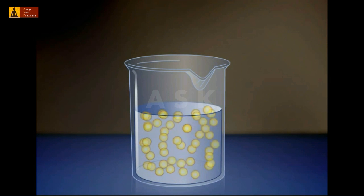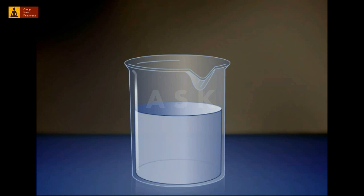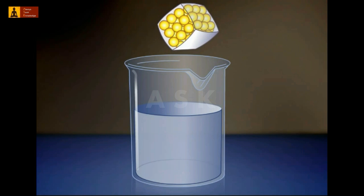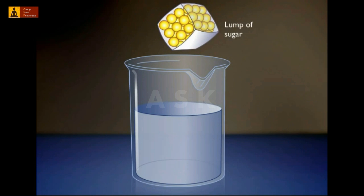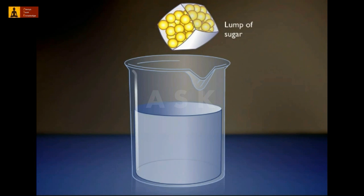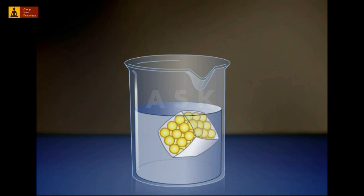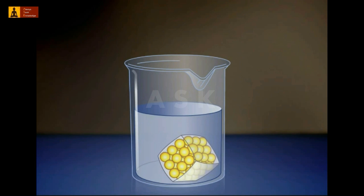Let's start with a beaker of plain water. What will happen if we now add a lump of sugar to the water? A lump of sugar is composed of many individual sugar molecules, and even as a solid lump the individual sugar molecules are in motion. When the lump is dropped into the water, it begins to dissolve.